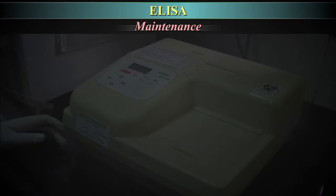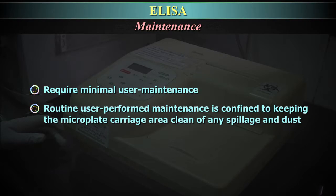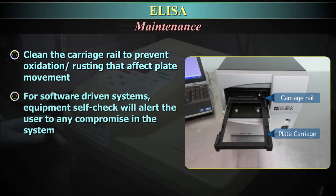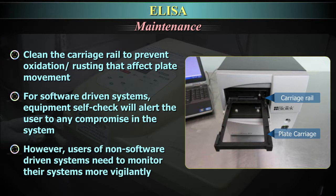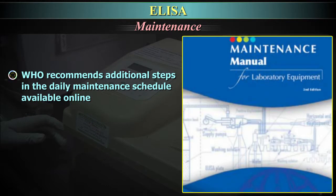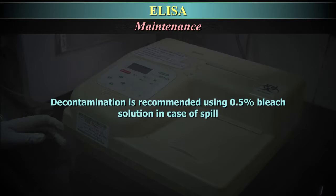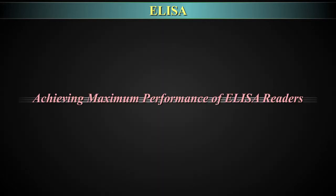Maintenance. ELISA readers require minimal user maintenance. Routine user-performed maintenance is confined to keeping the microplate carriage area clean of any spillage and dust. Clean the carriage rail to prevent oxidation or rusting that affects the plate movement. For software-driven systems, equipment self-check will alert the user to any compromise in the system. Users of non-software-driven systems need to monitor their systems more vigilantly. Decontamination is recommended using 0.5% bleach solution in case of spill, to achieve maximum performance of ELISA readers.